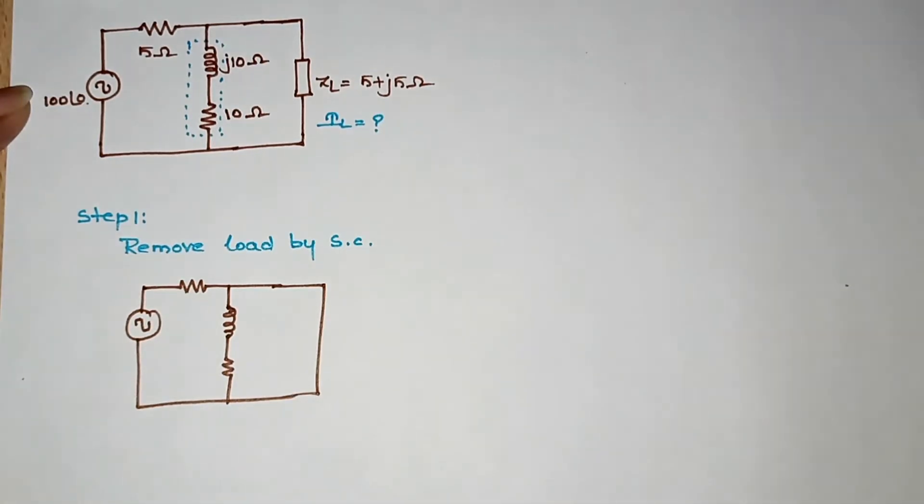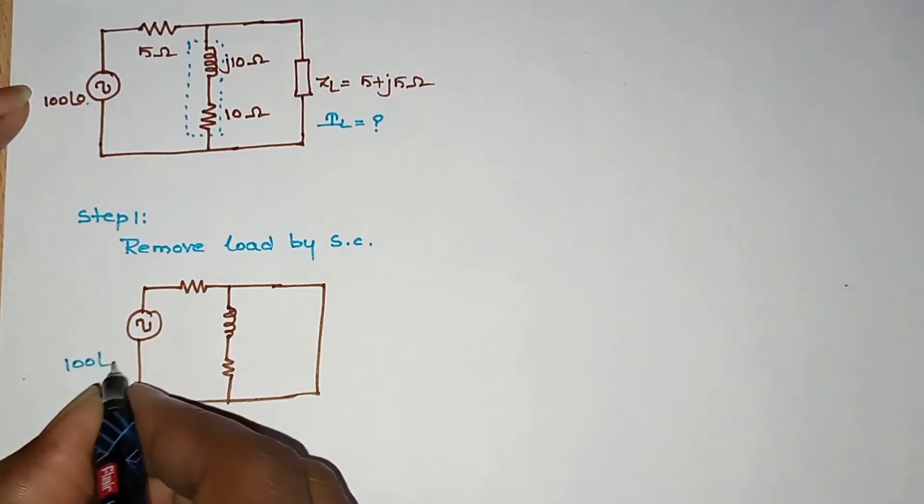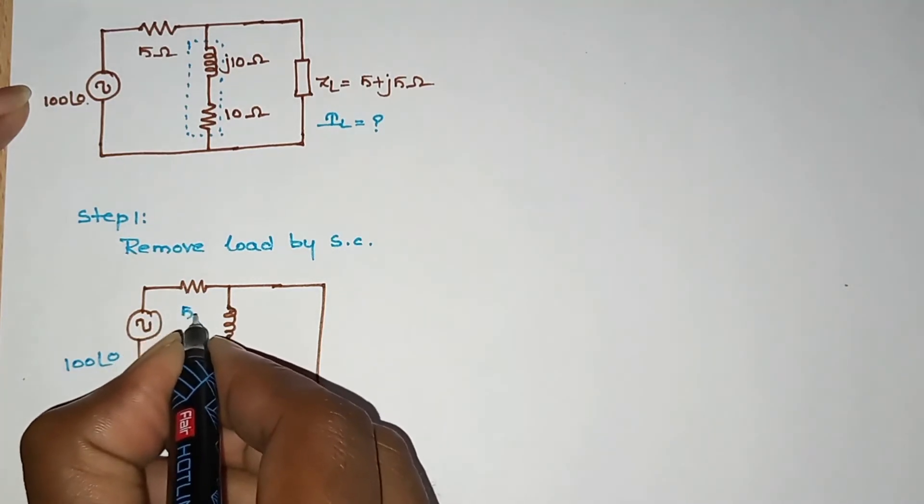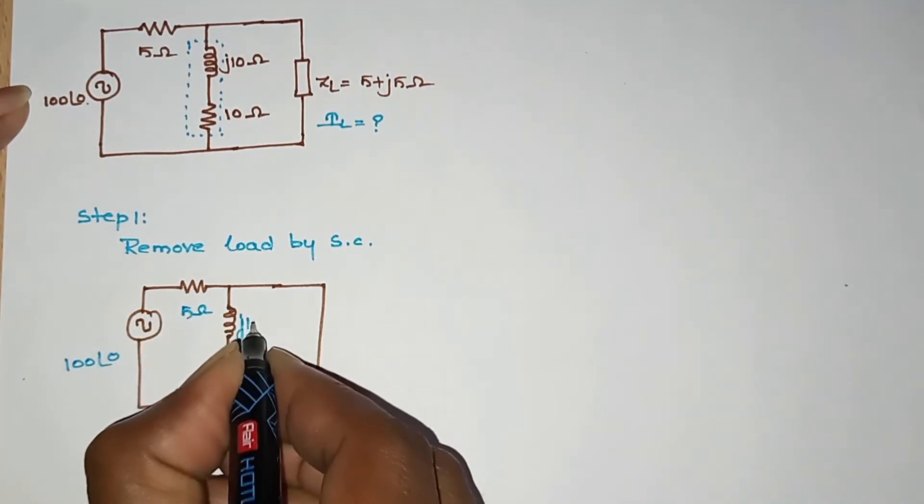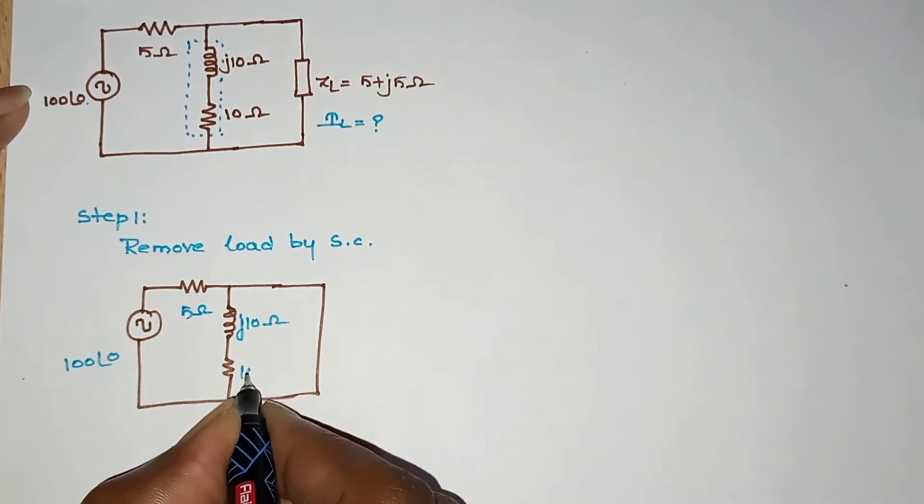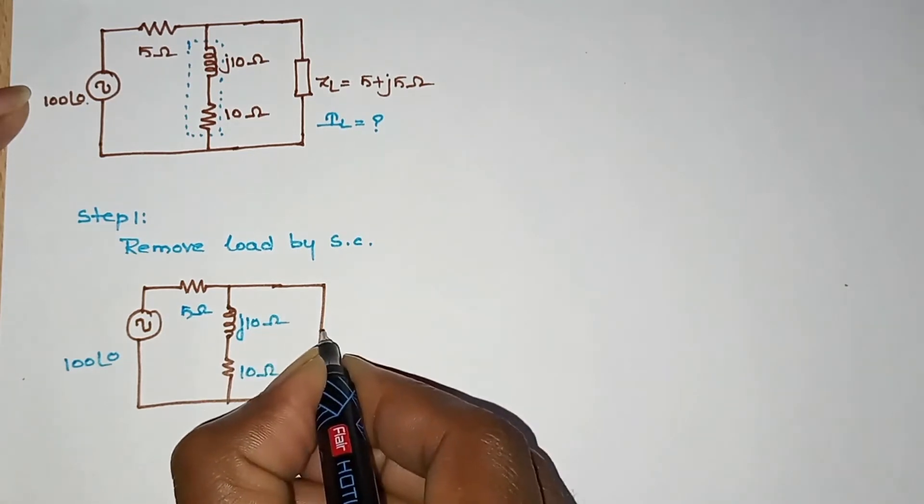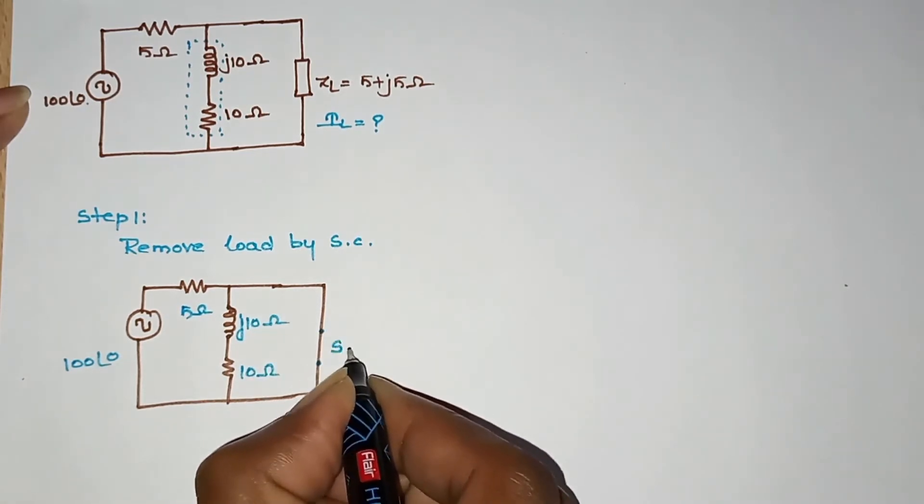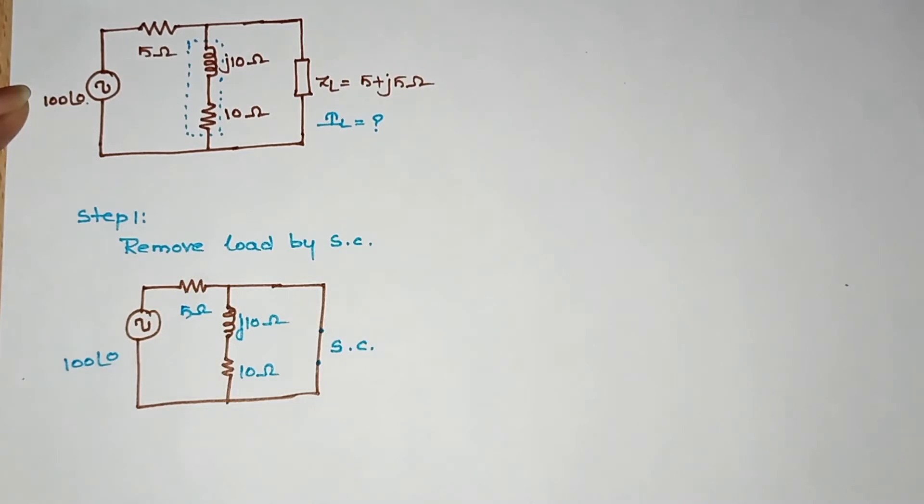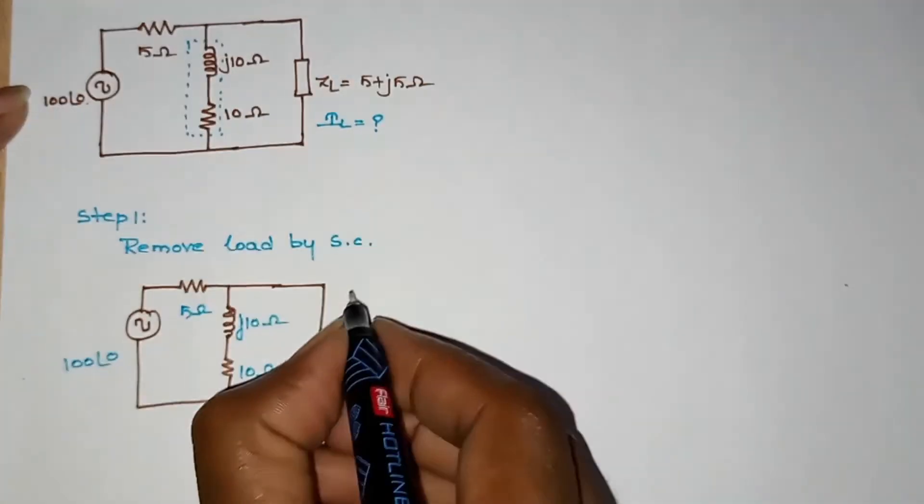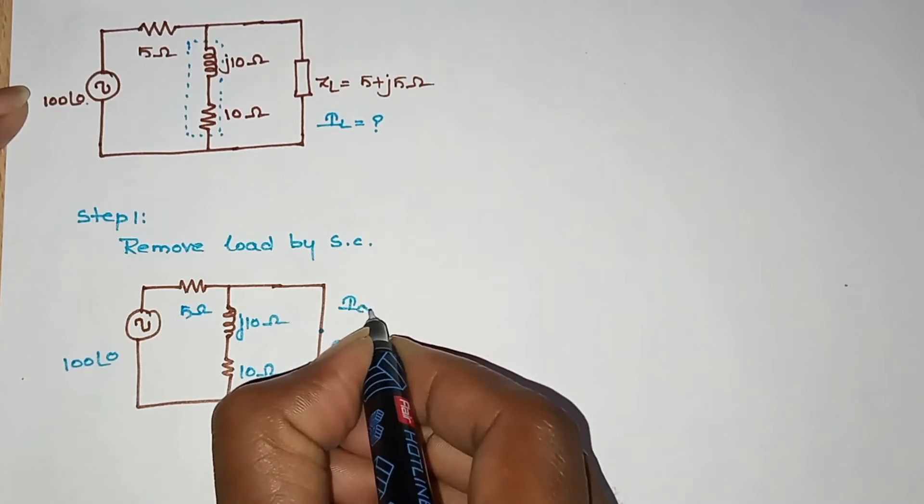We need to remove load and we need to remove voltage source. This has power of 0, which means 0 ohms, j10 ohms, and 10 ohms. Since we have a short circuit, we will enable a short circuit.